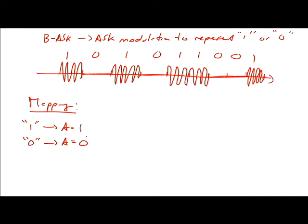That is what ASK looks like. You have the voltage level — the amplitude — at 1 when the bit is 1, and zero voltage when it's 0, so it's off. That is binary ASK or on-off keying. You can also have other variants like 4-ASK or 8-ASK, in which case you have four or eight amplitude values, each representing a unique pattern of binary digits or bits.